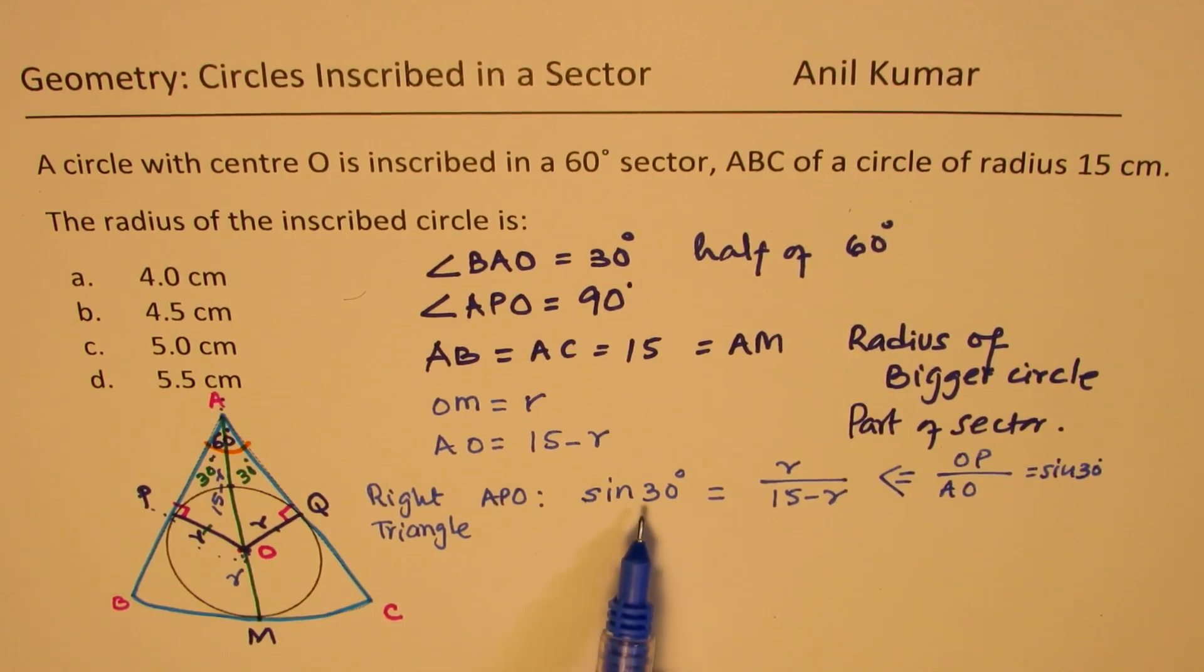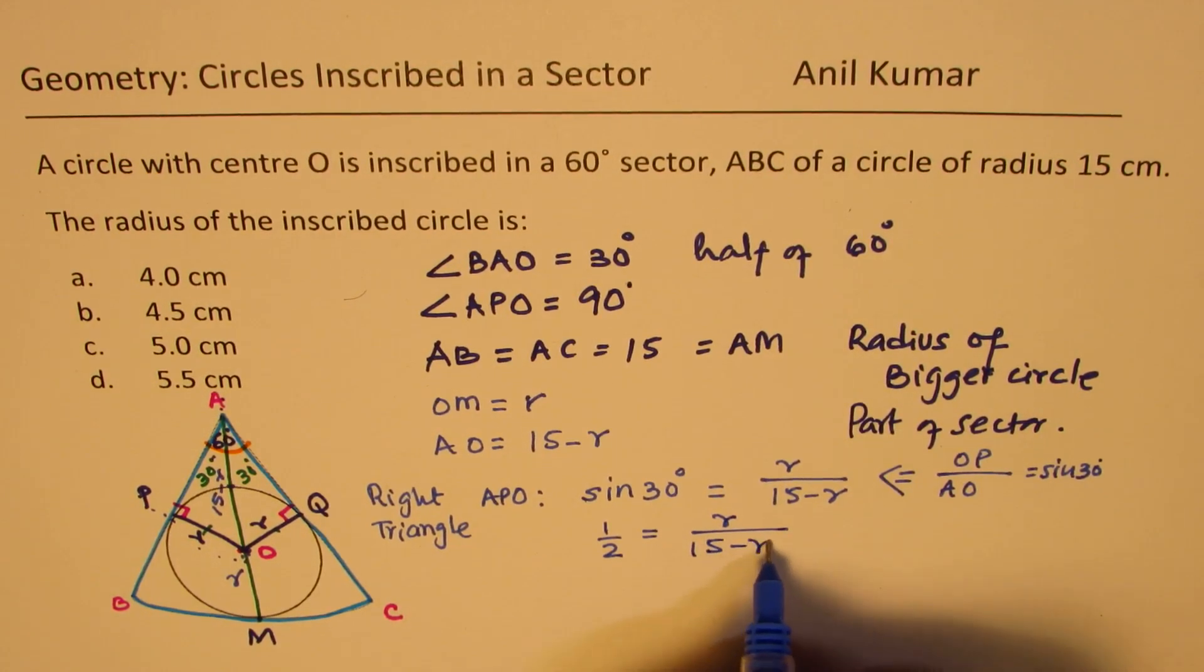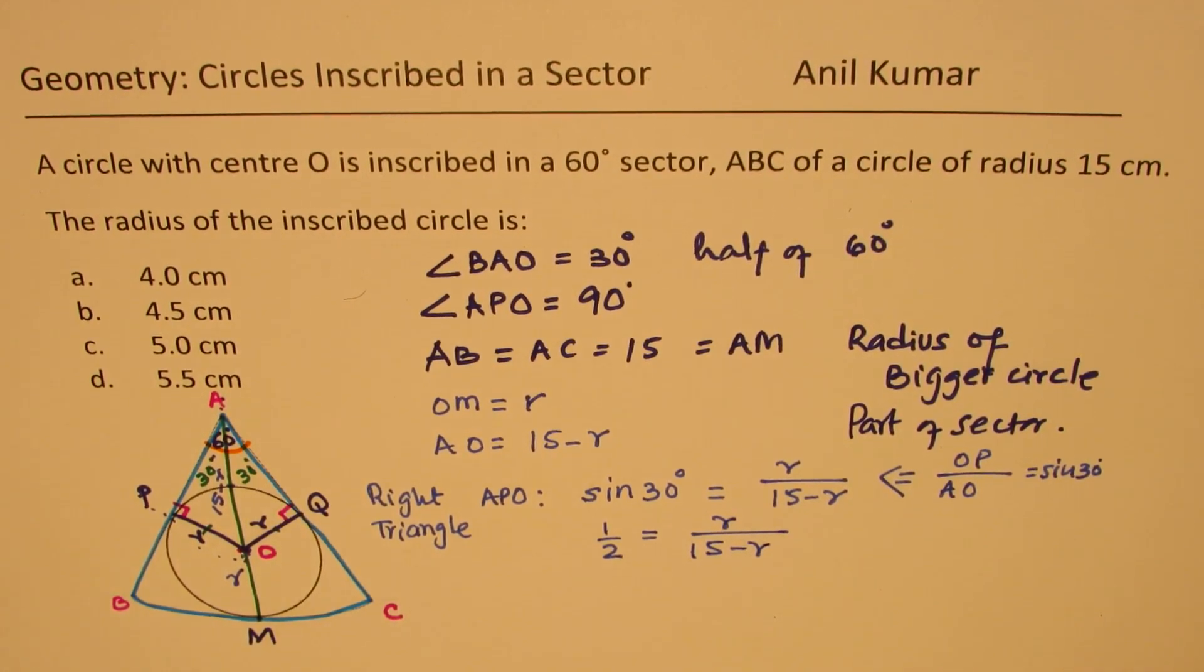Now, as you know, sine of 30 degrees is half. So we can write this as half is equal to R over 15 minus R. We can now cross multiply and solve.